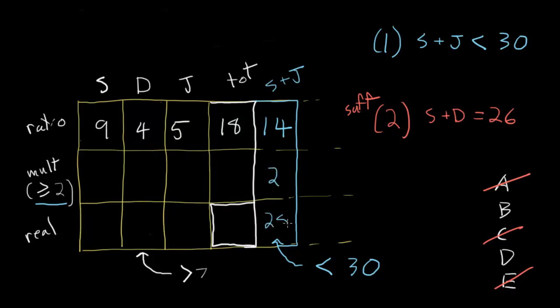And we've got our multiplier, so we know that the real total is 18 times 2, or 36. So statement number 1 is also sufficient, and we know the answer is D.